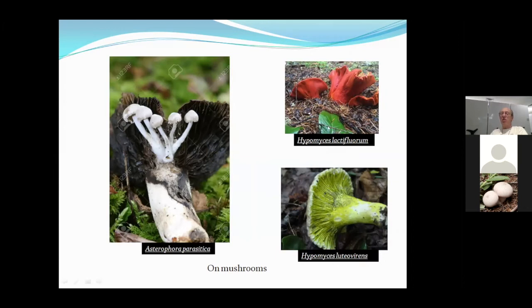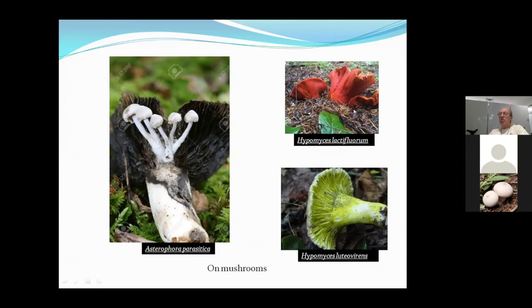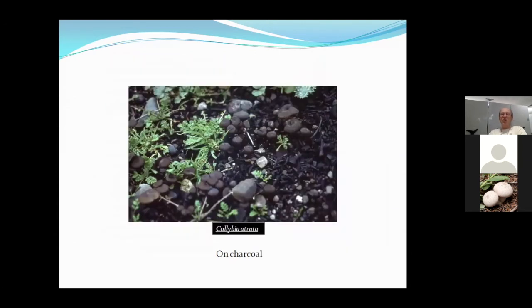Hypomyces lactifluorum on the red version is actually sold as an edible — called the lobster mushroom. It parasitizes Russula brevipes, which isn't edible, but replaces all the tissue and the result is quite good. There's also a green so-called lobster mushroom, Hypomyces luteovirens. Another interesting one is Collybia atrata, which grows on charcoal — if you find it, look down and you'll almost certainly find charcoal; old campsites are the most common spot.